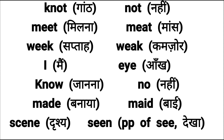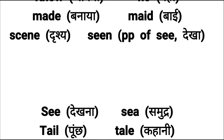'Scene' aur 'seen.' S-C-E-N-E — scene mani koi scenery, yani koi drishya. Aur S-W-N — 'seen,' ye 'see' ki third form hai. Iska matlab dekha. C mani dekha, toh third form 'see' ki 'seen' ho jati hai, jahaan pe use hoti hai.